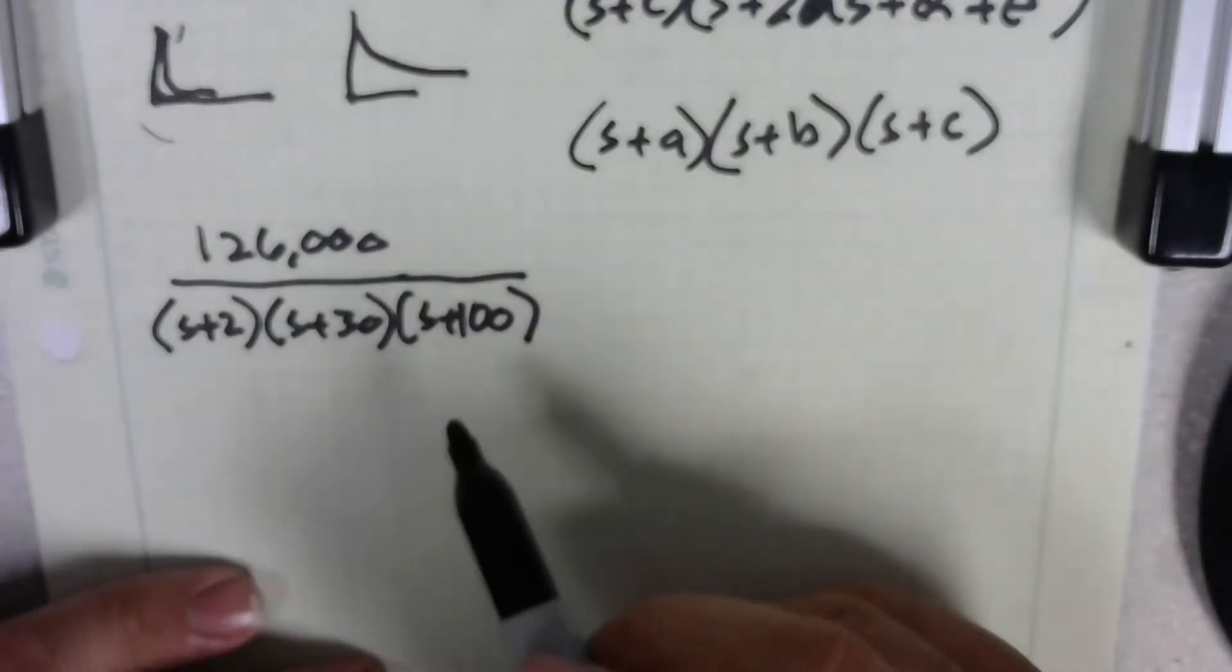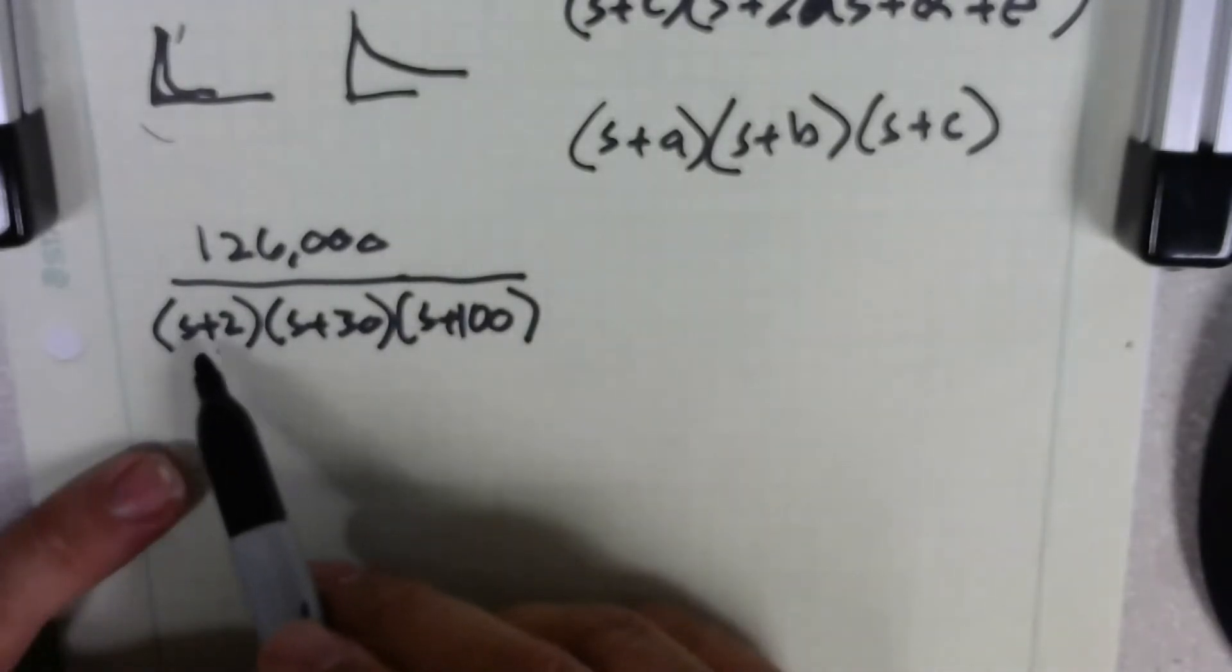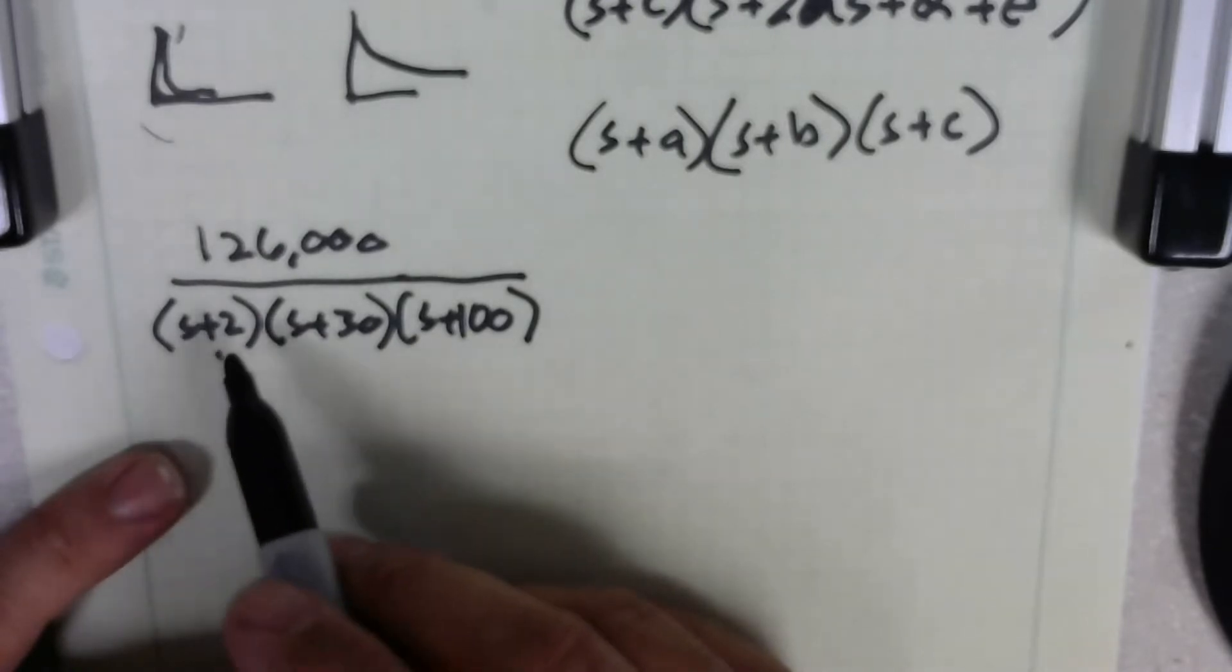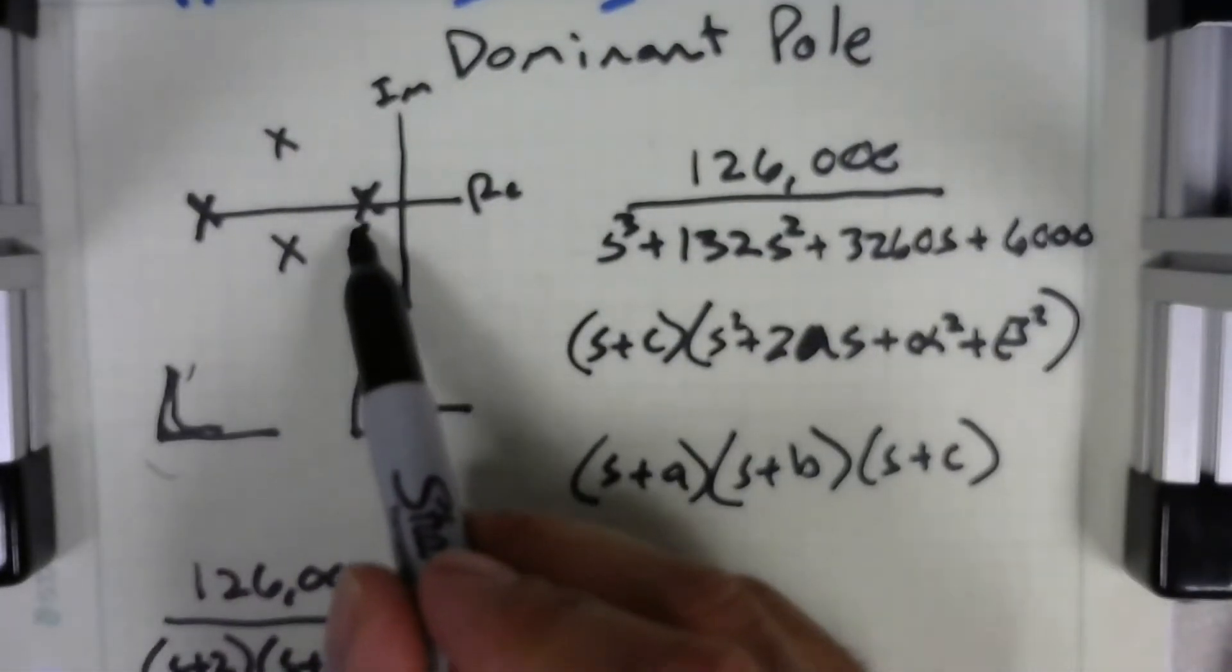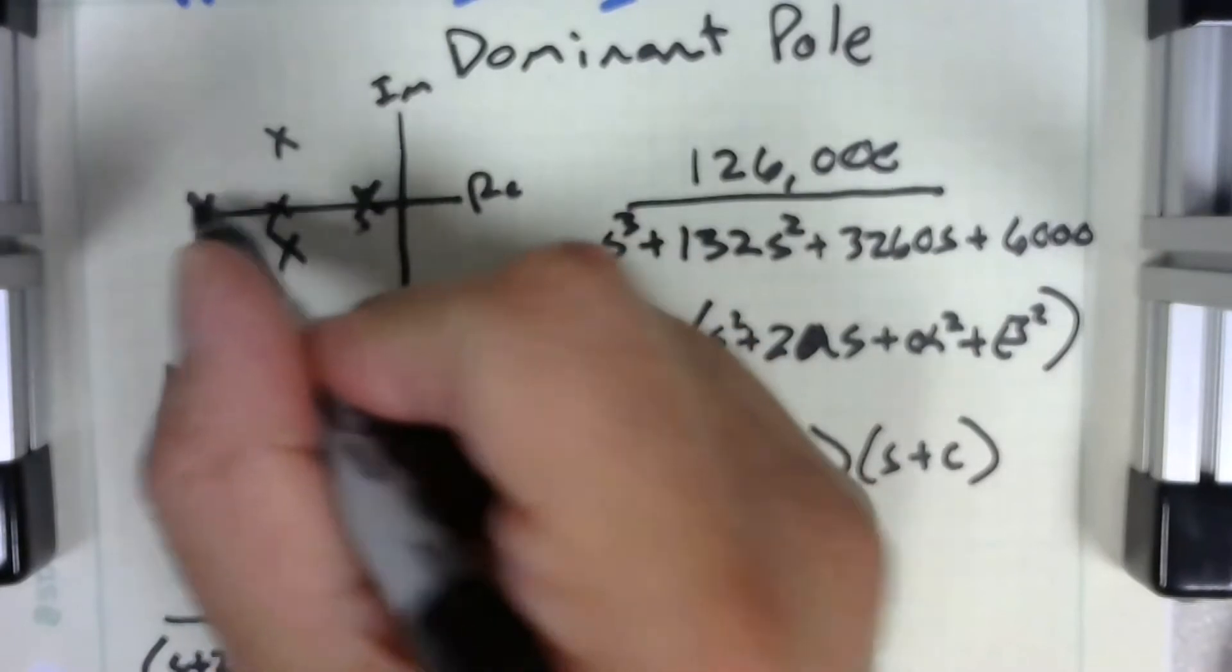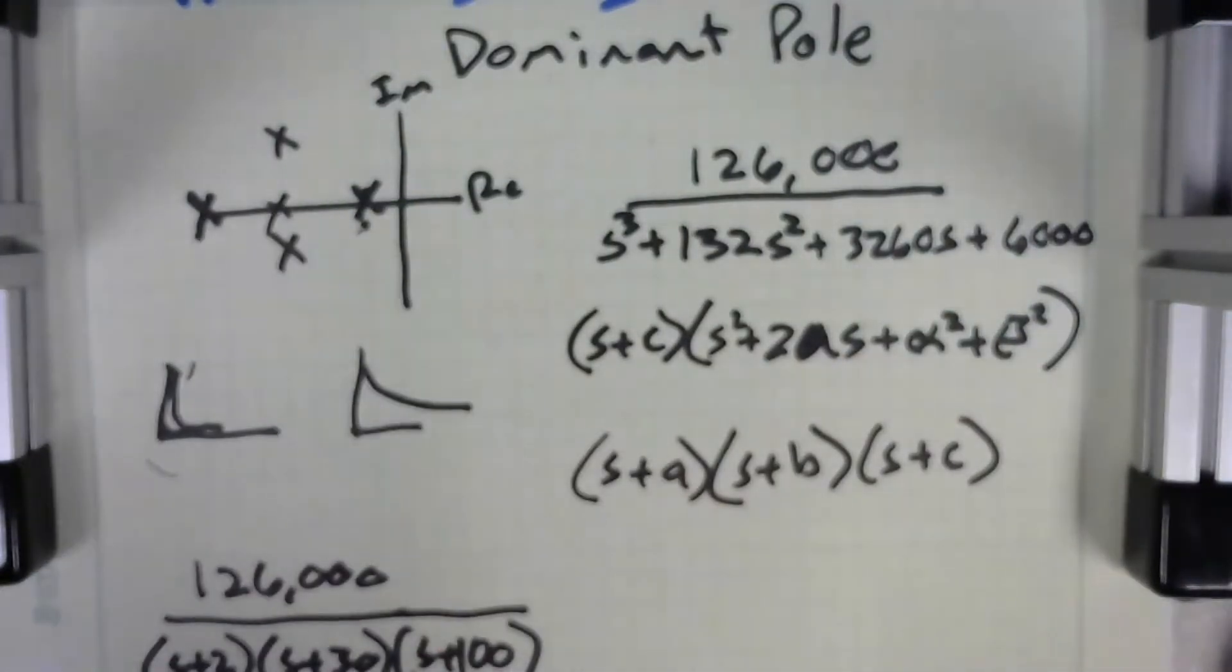So after we get to this point, what we're saying is this s plus 2, that's going to be our dominant pole. It's much closer to the imaginary axis. Looking back up here, this would be our s plus 2 pole, where then we have s plus 30 and s plus 100. So these are the ones that we're going to cancel out.